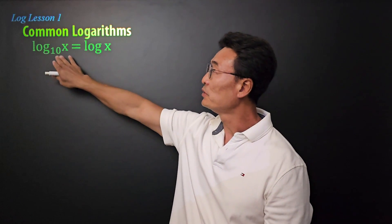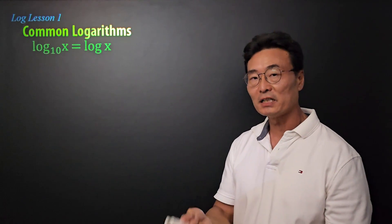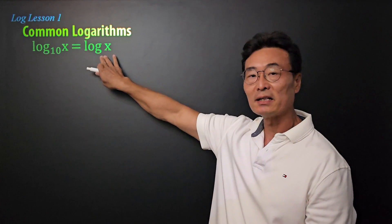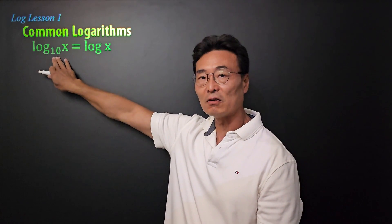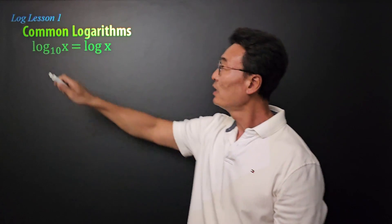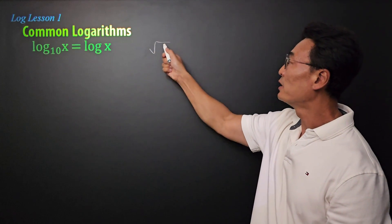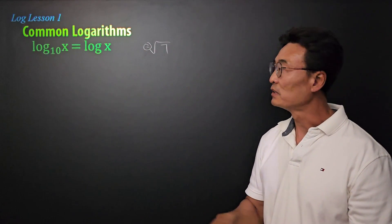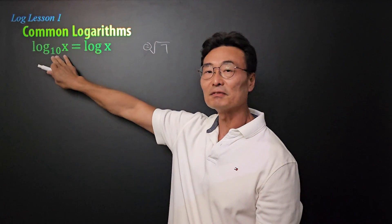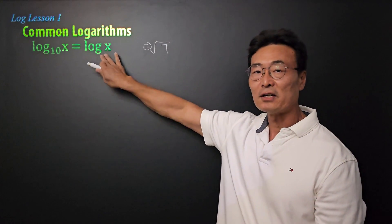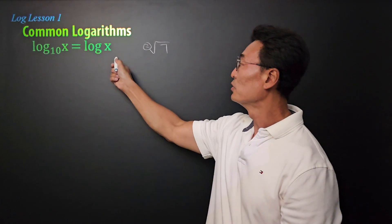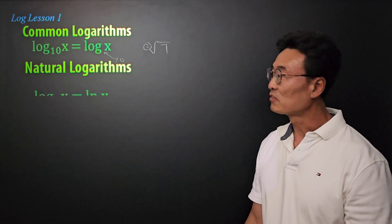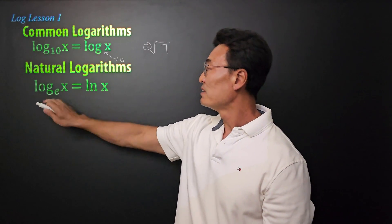When we have log base 10, we like to just rewrite it as log without the base written, because we use base 10 so often in math. Just like when you do a square root we don't write the 2, for the same reason when we use base 10 we only write log of x.